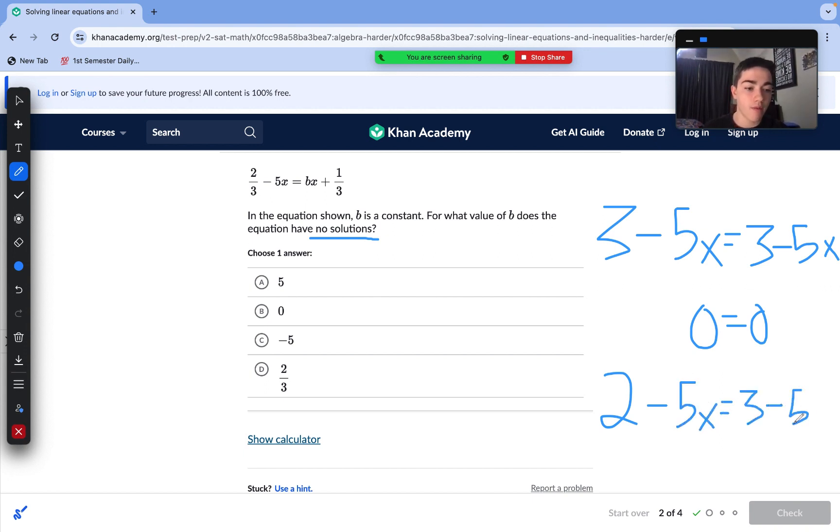We have the same variable term on each side, but we have differing constant terms. So if we were to solve this, we add 5x both sides. It cancels out on both sides. Then we are just left with 2 equals 3. And we know that 2 does not equal 3. So that's an example of no solutions. We're going to get an incorrect statement like 2 equals 3. We know that is not true. And then infinite solutions, we get 0 equals 0. Here we're dealing with no solutions.